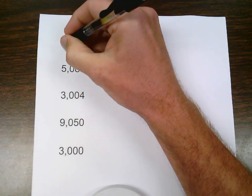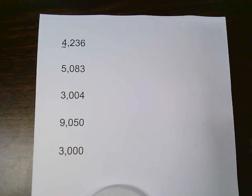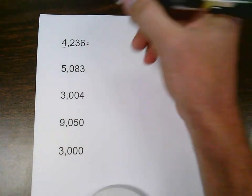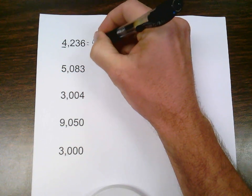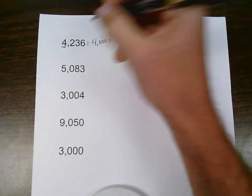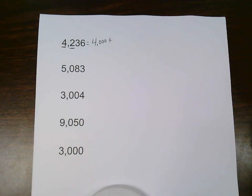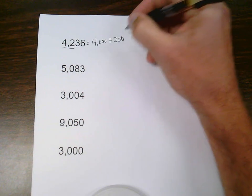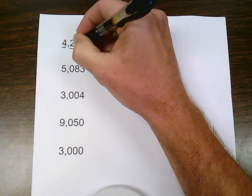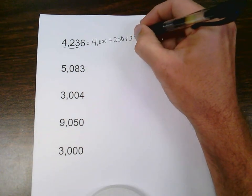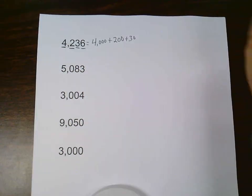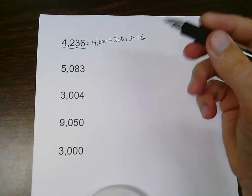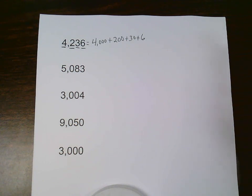I start off with the highest place value which is the thousands, and I have a 4 in the thousands. So that 4 in the thousands place is worth 4,000. And I will add it to the value of the next digit. My next digit is a 2 in the hundreds place. That will be worth 200. Add it to the value of the next digit. A 3 in the tens place worth 30. And add it to the value of my ones place which is 6. So 4,236 is equal to 4,000 plus 200 plus 30 plus 6 in expanded form.